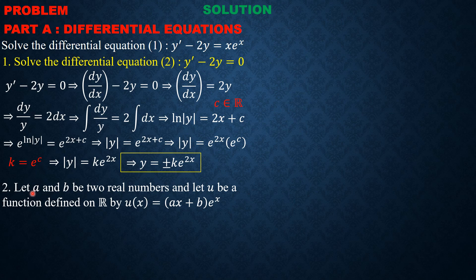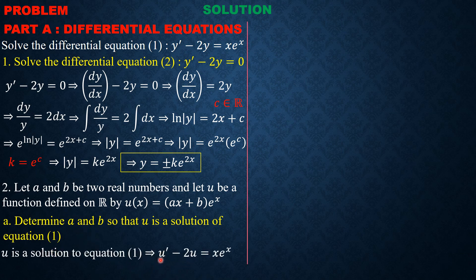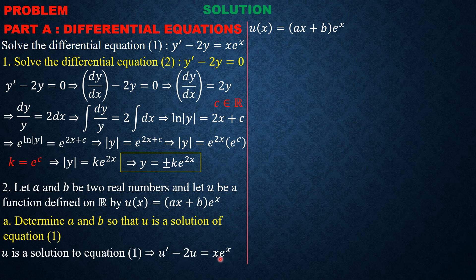For the second part, a and b are two real numbers and u is a function defined on ℝ by u(x) equals (ax + b)eˣ. We are asked to determine a and b so that u is a solution of equation 1. For u to be a solution of equation 1, we need u prime minus 2u to equal x·eˣ, so we must compute u prime.